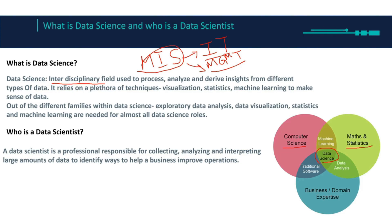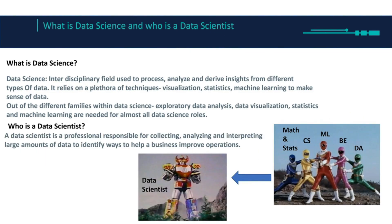Think of each field kind of like a Power Ranger. If you guys remember Power Rangers — let's say the blue ranger is math and stats, yellow is computer science, the red ranger is machine learning, the pink ranger is business expertise, and the green ranger is data analysis. When they combine together they form something called Megazord. So basically a data scientist is a Megazord — when you combine all these fields you get this powerful person.